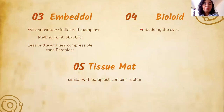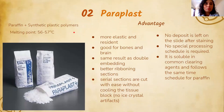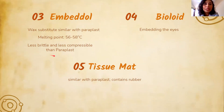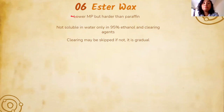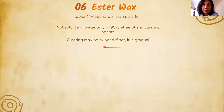Embedol is another wax substitute similar to paraplast, with a melting point of 56–58°C. It is less brittle and less compressible than paraplast. Bioloid is specifically good for embedding eyes. Tissue Matte is similar to paraplast but contains more rubber. Ester wax has a lower melting point but is harder than paraffin. It is not soluble in water — only in ethanol and clearing agents. Water contamination is a problem with ester wax.